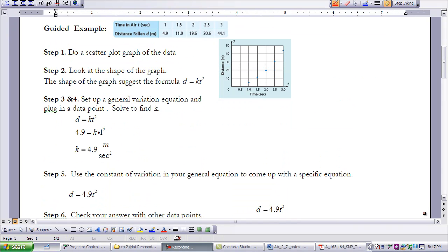We're going to do this first guide example together. We have some data—we're looking at time in air and distance fallen. So we have a data table put together. Time in the air is one second, and the distance that this ball has fallen is 4.9 meters. If it's been in the air for 1.5 seconds, it has fallen 11 meters, and so on. So what we're going to start off with is step one. We're going to do a scatter plot graph of the data, and as you notice here, the graph is already done for you.